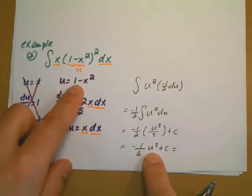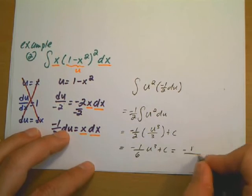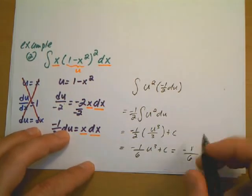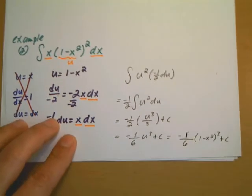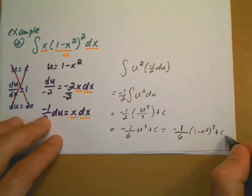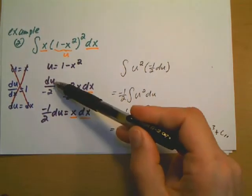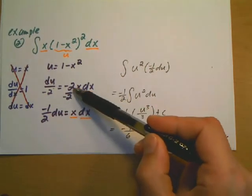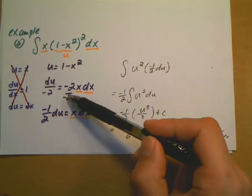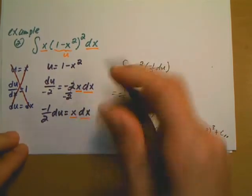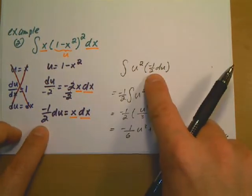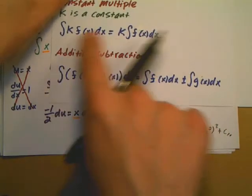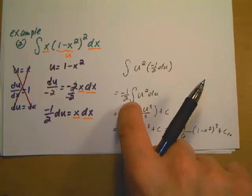Last thing: put everything back in terms of x. So it's negative 1 over 6 times (1 minus x squared) to the third power, plus C. That's the anti-derivative. The only difference in this example was the extra negative 2 in the du — I'm allowed to divide constants over, so I just divided it to get negative 1 half du equal to x dx, then factored out the negative 1 half.